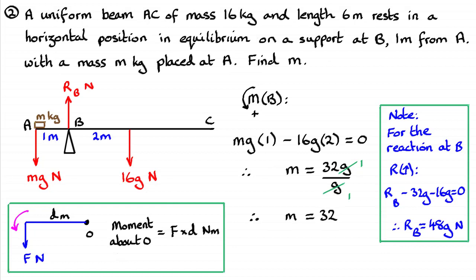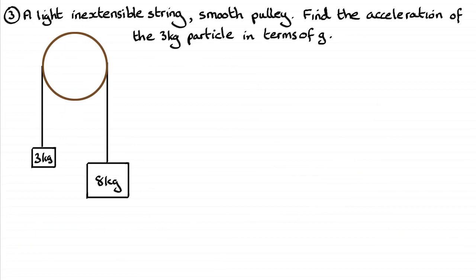Let's move on to question three. Here it is — I've sketched a diagram just to save time. This is a typical kind of diagram you'll see on an exam paper or textbook, where we've got a light inextensible string passing over a smooth pulley. The question is to find the acceleration of the three kilogram particle in terms of g, the acceleration due to gravity. Just leave you with that one for a few moments, and when you come back we'll run through the solution.